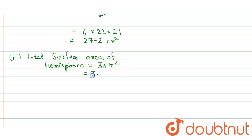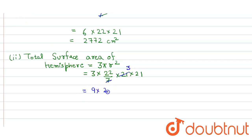We simply put in the values: 3 × (22/7) × 21 × 21. Again, the 7 cancels with 21 to give 3, and we get 9 × 22 × 21. When we multiply, we get 4158 square centimeters. So that's our answer.